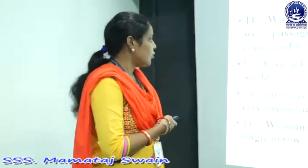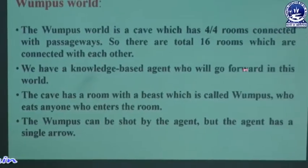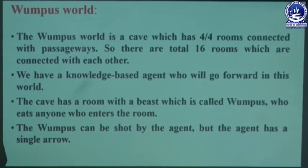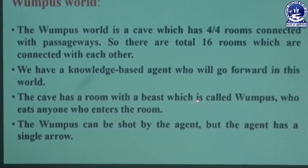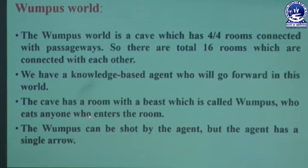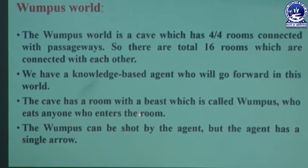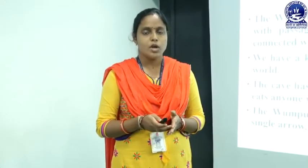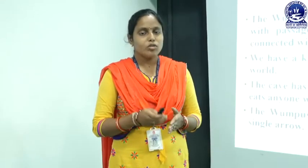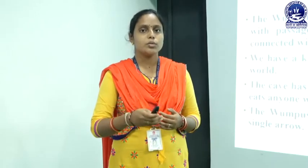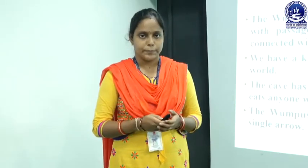Next, we have a knowledge-based agent who will go forward in this world. In Wumpus World, the knowledge-based agent can only move forward. The cave has a room with a beast called Wumpus, who eats anyone who enters the room. From the 16 rooms, in one room there is a Wumpus, and that Wumpus eats anyone who enters into that room.